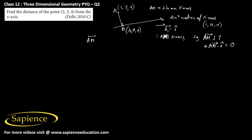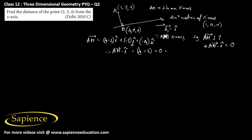The AM vector can be written as (λ − 2) i-cap + (−3) j-cap + (−4) k-cap. Therefore, AM vector dot i-cap equals λ − 2, and that should be equal to 0. So λ will be equal to 2.